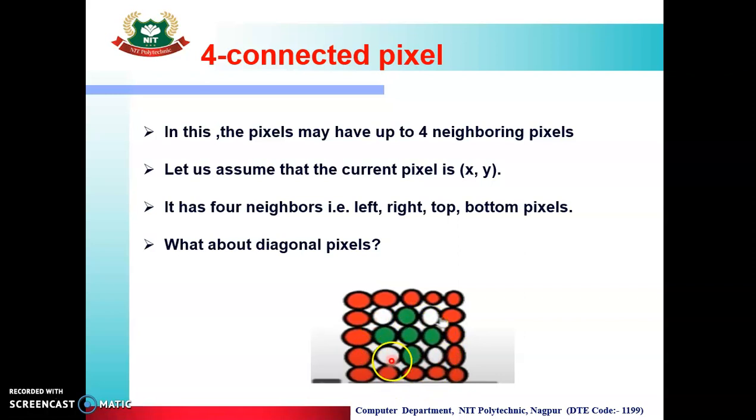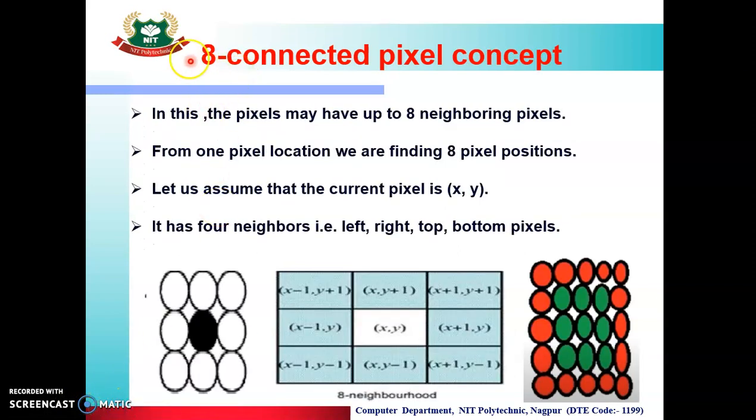So, what about these diagonal pixels? The solution is that instead of using 4 connected pixel, we should use 8 connected pixel concept. Now in 8 connected pixel concept, we have these 4 neighboring pixels, plus we can also fill the diagonal pixels by providing their positions.